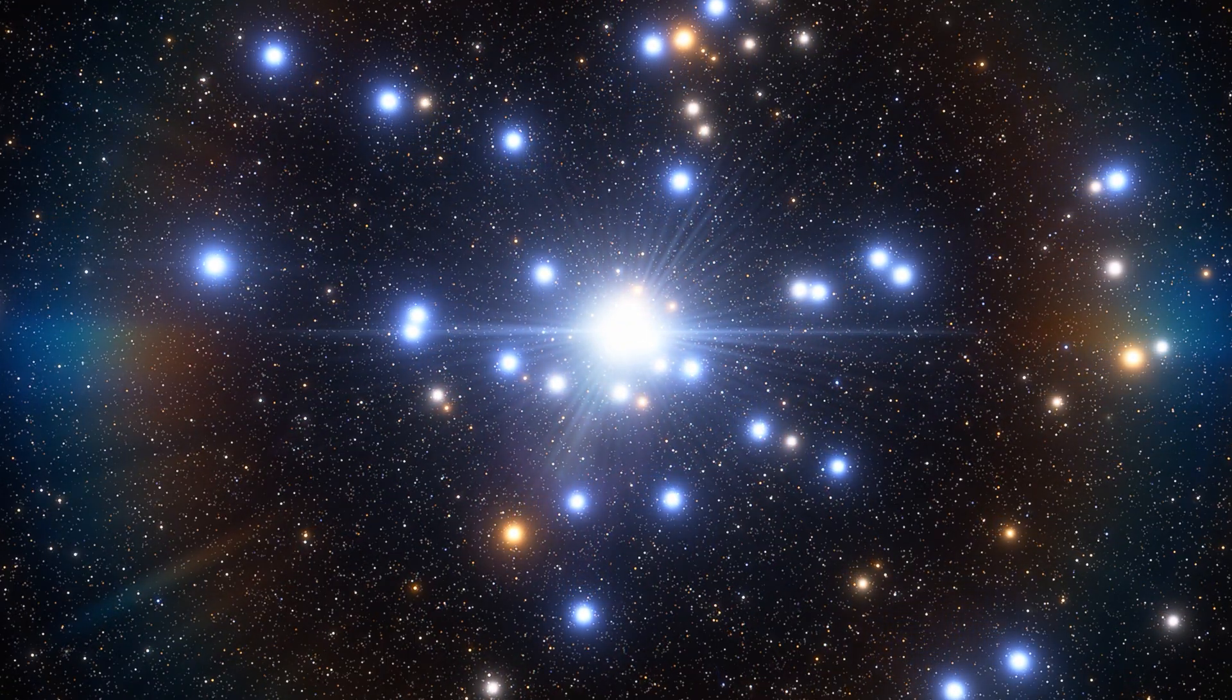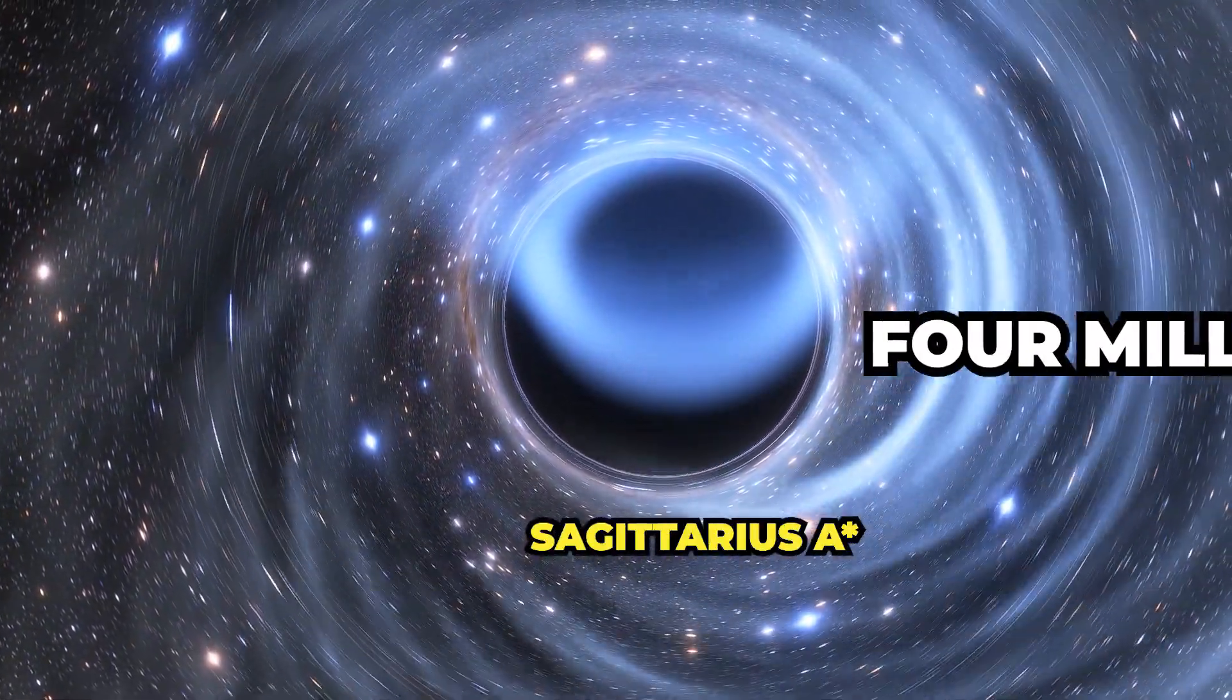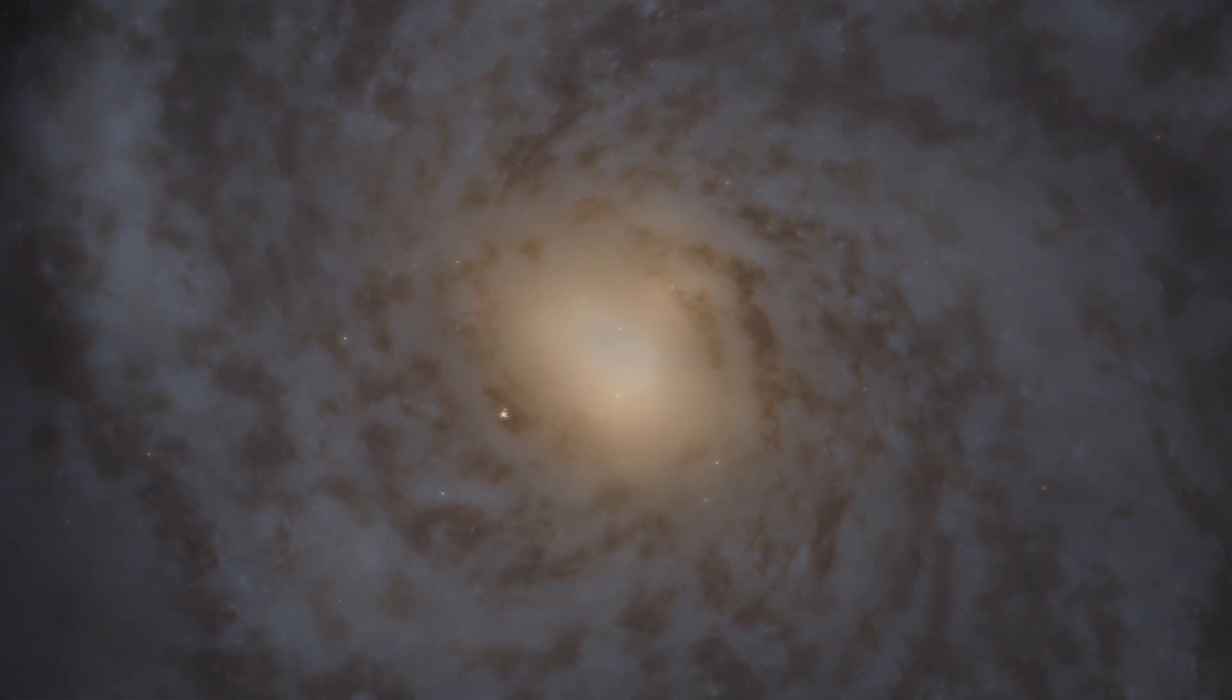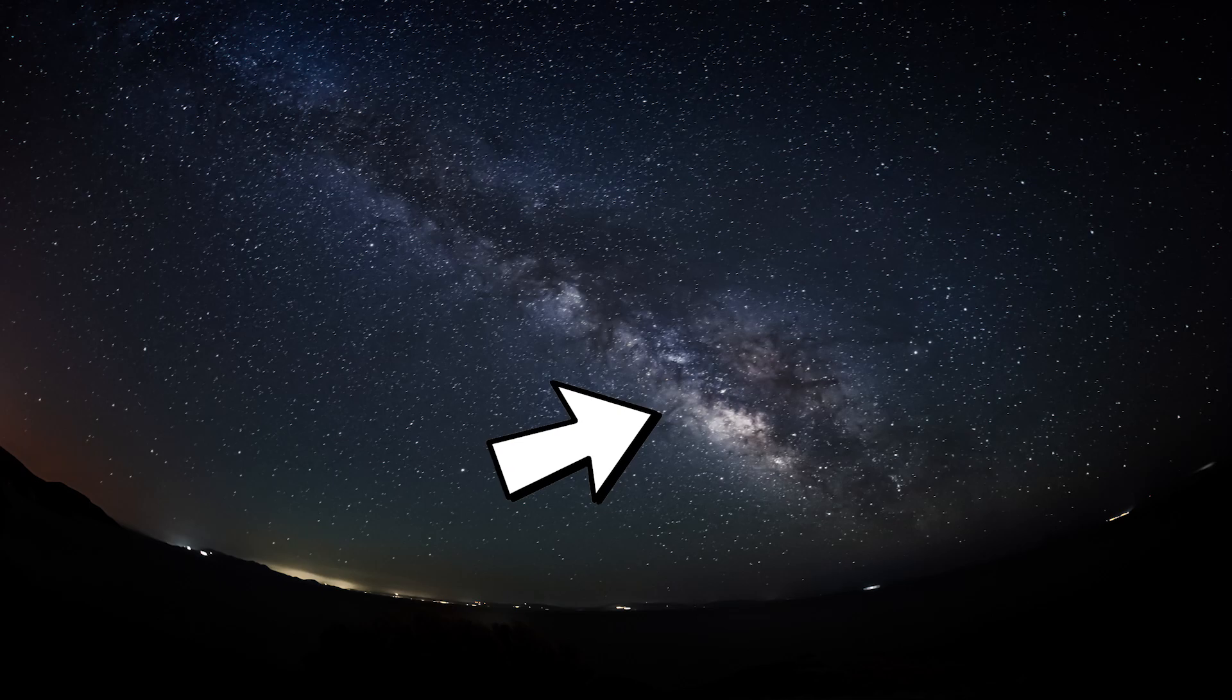Right at the center of our galaxy lies a supermassive black hole known as Sagittarius A-star, about 4 million times more massive than the Sun. The galactic center, also known as the galactic nucleus, is about 26,000 light-years away from us and is the brightest region of the Milky Way.